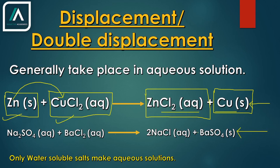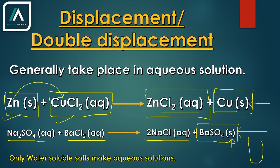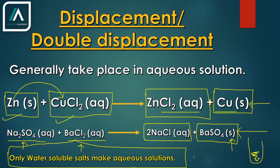This second reaction is an example of double displacement reaction. Double displacement reactions also generally take place in aqueous solution. All the water-soluble salts are written in aqueous form because they make aqueous solutions. Only barium sulphate is an example of a water-insoluble salt, so it will be a solid. This is also an example of a precipitation reaction. Only water-soluble salts make aqueous solution; if a salt is not water-soluble — for example calcium sulfate or calcium carbonate — then it will not form aqueous solution and must be written as solid.